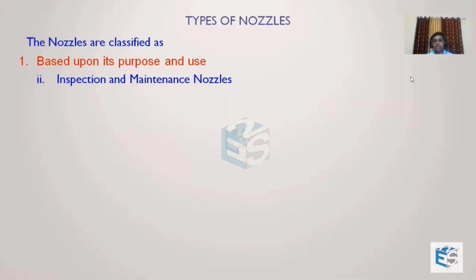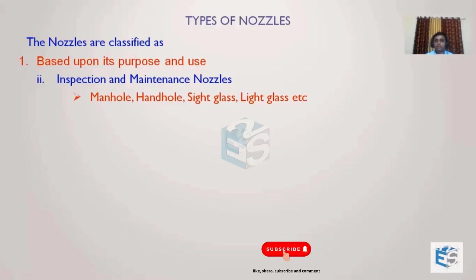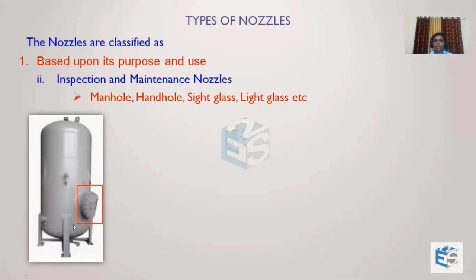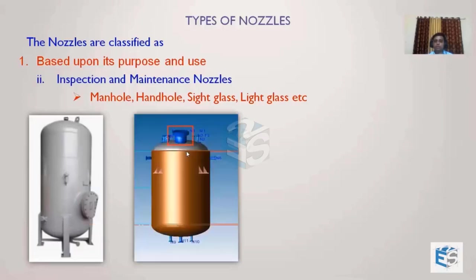The second type is inspection and maintenance nozzles. Every equipment, based upon its operation, may or may not require maintenance nozzles. Sometimes if critical maintenance is required, manholes of a size — say 600 mm, 500 mm, or 650 mm — are provided from which a person can go inside and do cleaning or other maintenance. If there are internals to be replaced or installed, manway or inspection openings are also required. Typical nozzles used for this include the manhole, handhole, side glass, and slide glass.